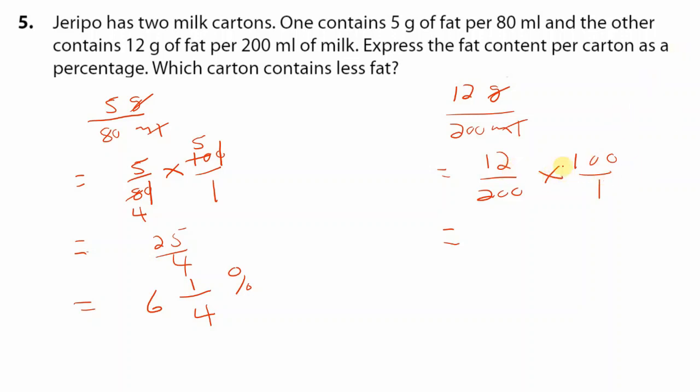So now let's determine the fat content of the other one. So we multiply and divide, we are allowed to cancel. So 0 and a 0, another 0 and another 0. 2 go into 12, 6 times. So we have 6, 6 times 1 is 6 at the top. 1 times 1 is 1 at the bottom. So this is equal to 6 and it's a percentage. So the question was, which carton contains less fat. Well, 6% is less than 6 and a quarter percent. So it is the 12 gram per 200 milliliter carton. So that is the one that contains less fat.